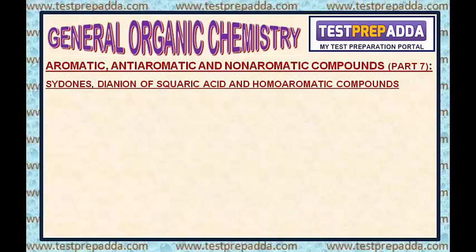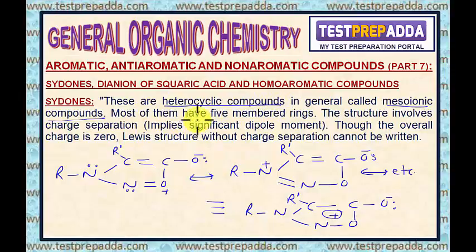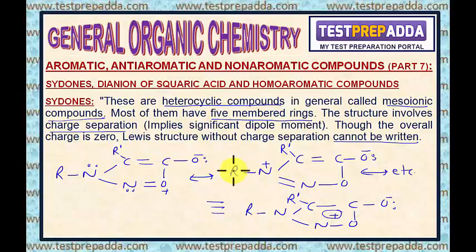First of all, cidones. Cidones are actually examples of mesoionic compounds. Mesoionic compounds are actually heterocyclic compounds. Most of them have a five-membered ring. The structure involves charge separation. Though the overall charge is zero, a Lewis structure without charge separation cannot be written. This is cidone — an example of a mesoionic compound. You can see all these structures have charge separation.